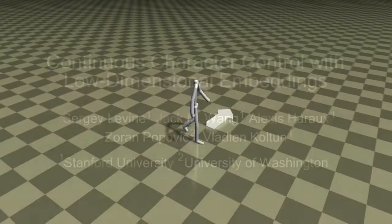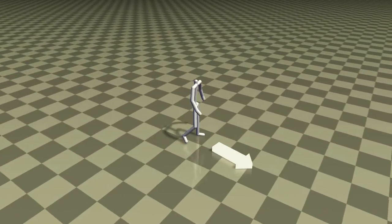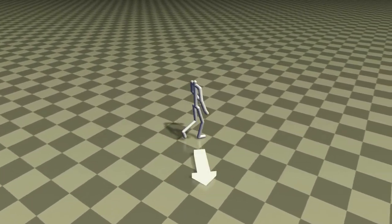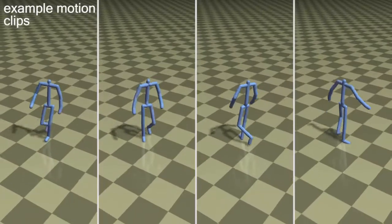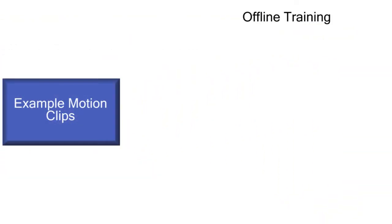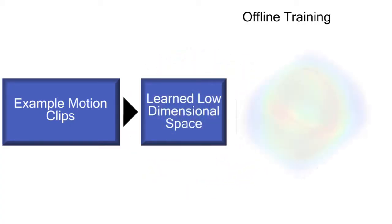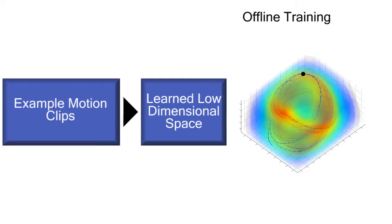We present a method for interactively controlling kinematic characters that perform user-specified tasks from a small number of example clips. Our method first uses the example clips to learn a low-dimensional space that captures a continuous range of character motions. We then pre-compute a controller that navigates this low-dimensional space to accomplish the desired task.